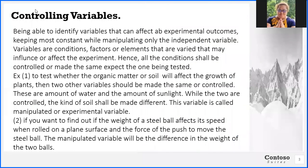Number two is what we call controlling variables — being able to identify variables that can affect experimental outcomes, keeping most constant while manipulating only the independent variable. Variables are conditions, factors, or elements that are varied and may influence or affect experiments. The conditions should be controlled and tested.